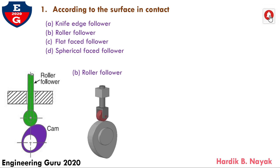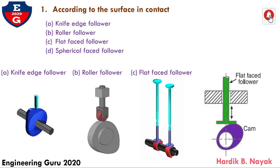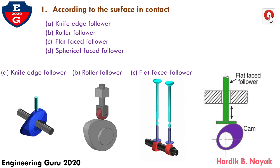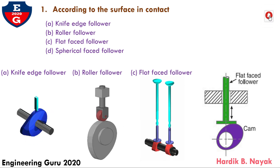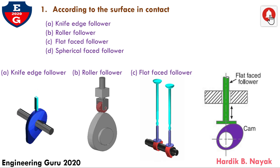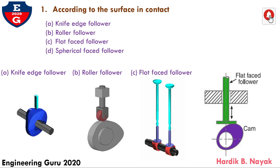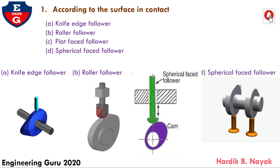The roller followers are extensively used where more space is allowable, such as in stationary gas and oil engines and aircraft engines. Now, third is flat face follower. When the contacting end of the follower is a perfectly flat face, it is called flat face follower. It may be noted that the side thrust between the follower and the guide is much reduced in case of flat face follower. The flat face followers are generally used where space is limited, such as in cams which operate the valve of automobile engines.